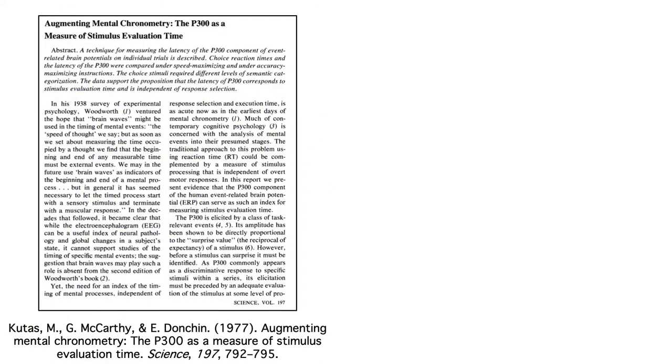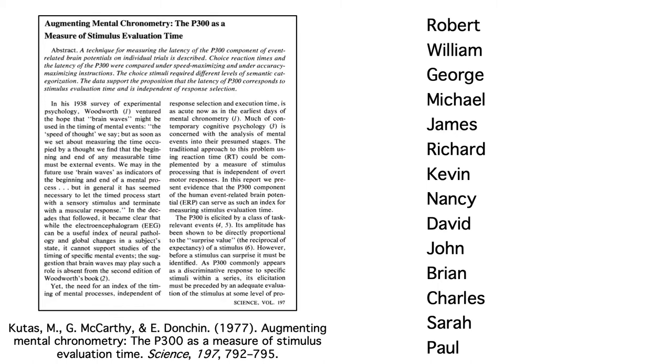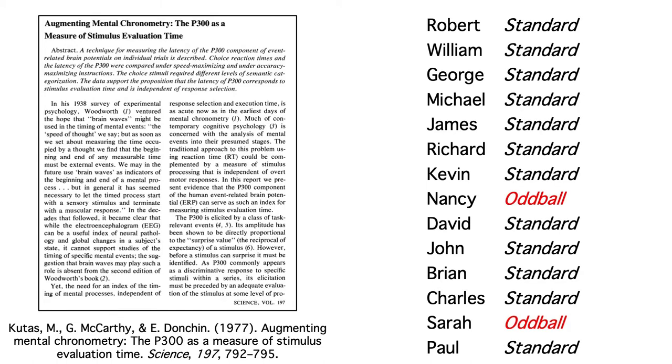To explain P3 latency, I want to talk about this very old oddball study by Marta Koudis, Greg McCarthy, and Manny Donchin. They presented names on a video display, with one name every two seconds. 80% of the names were typical American male names of the time, such as Michael, David, and John. 20% of the names were typical female names, such as Nancy and Sarah.